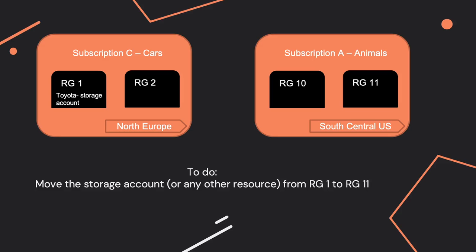The first question I'd like to start with is: are we able to move resources from one subscription to another, especially when the subscriptions are located in different regions? I have two subscriptions — one is in North Europe and the other in South Central US. Each has two resource groups, and I chose to have a storage account in RG1. This is a question with a high possibility of appearing on the exam, so make sure you understand it.